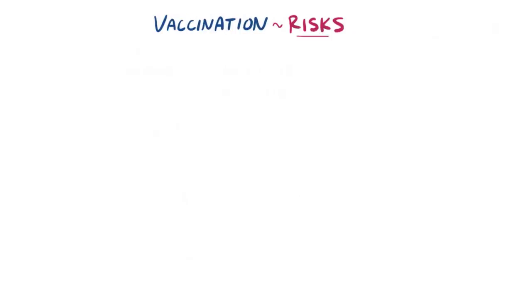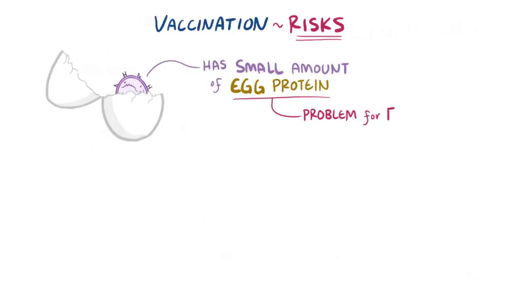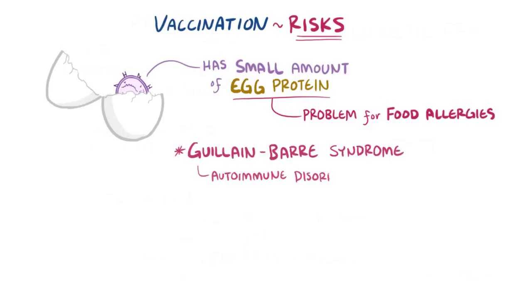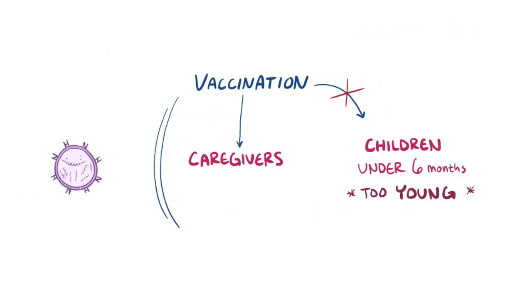There are a few risks associated with getting the flu vaccine. Most flu vaccines are produced by growing the virus inside of a chicken embryo, and therefore the vaccine contains small amounts of egg protein, which can be a problem for individuals with a food allergy. Guillain-Barre syndrome, an autoimmune disorder of the peripheral nervous system, is another side effect believed to be associated with the influenza vaccine. Lastly, children under 6 months old are in the pediatric group at the highest risk of serious influenza complications, but they're too young to get the flu vaccine. That said, the best way to protect these young infants is to make sure their caregivers are vaccinated, which creates a natural barrier to infection.